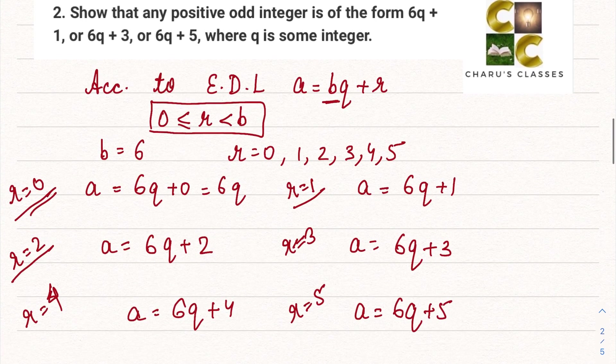Now in the question we have to prove that any positive odd integer is of this form. So if we check, suppose let's just talk about 6q. 6q means 6 multiplied by any number. So definitely all the multiples of 6 are even numbers. So 6q is going to be even.